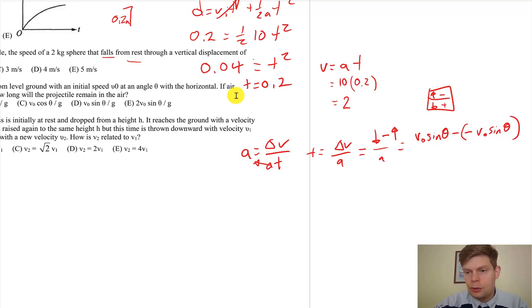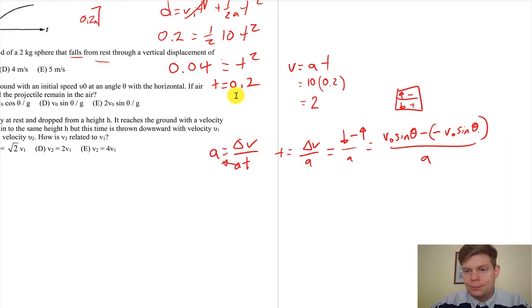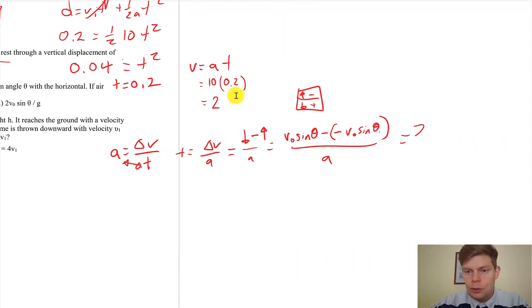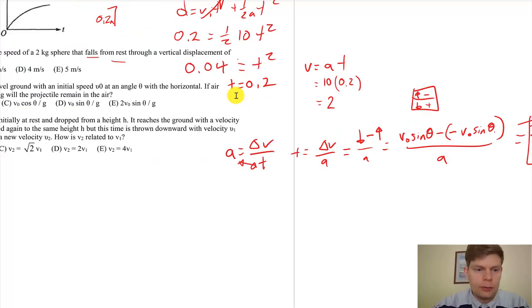Yeah, so remember it would start off with v_0 sin θ of upward momentum, and what if it's coming back to the same height? Whenever you throw something up, it's got the same velocity down at the end over a—or two v_0 sin θ over a. Nice little trick. So that's what we're looking for, and we got it.